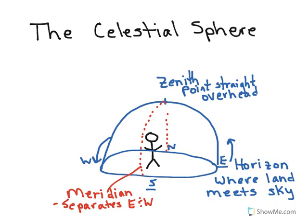When you tell time and you designate the time as AM or PM, those are references to the meridian. AM is when the sun is in the sky before the meridian. AM stands for ante-meridian, which means before the meridian. PM is post-meridian, or after the meridian. So PM is when the sun has passed the meridian. And local noon is when the sun is on the meridian.